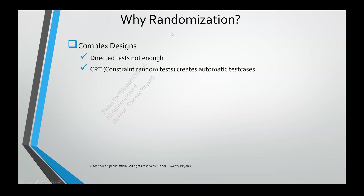In randomization you can create what is called a Constraint Random Test (CRT). We are going to see what constraints are in the upcoming lecture. Just remember we are going to create a CRT, which means we automate the test cases — whatever variables are there in the design, we randomize them automatically. In randomization you can also create test scenarios which are unpredictable but still realistic. There can be scenarios, like we said, where some condition I have not thought of is causing a hang in the system. It is realistic because it can occur in the design, and randomization helps you create and find such bugs.